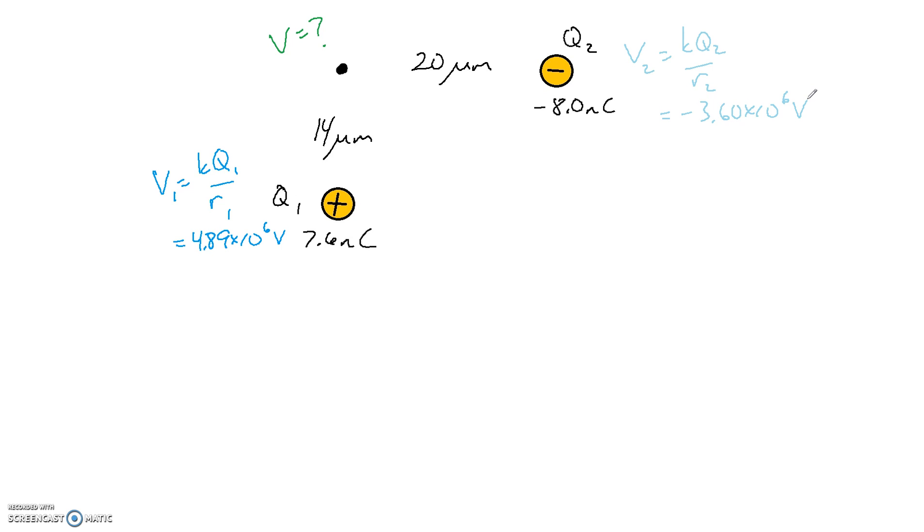Now the nice thing is all I have to do is take those two potentials and put them together. And the nice thing about potential is it's a scalar quantity. I still hang on to positives and negatives due to the nature of the charges, but I don't have to make any triangles or do any trig or any Pythagoras. So if I put those two together, I can get my total voltage at that location. And if I do that, I can find that my total voltage at that point is 1.29 times 10 to the 6 volts. And that is my total electric potential at this location.